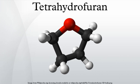A third major industrial route entails hydroformylation of allyl alcohol followed by hydrogenation to the butanediol. THF can also be synthesized by catalytic hydrogenation of furan. Certain sugars can be converted to THF, although this method is not widely practiced.